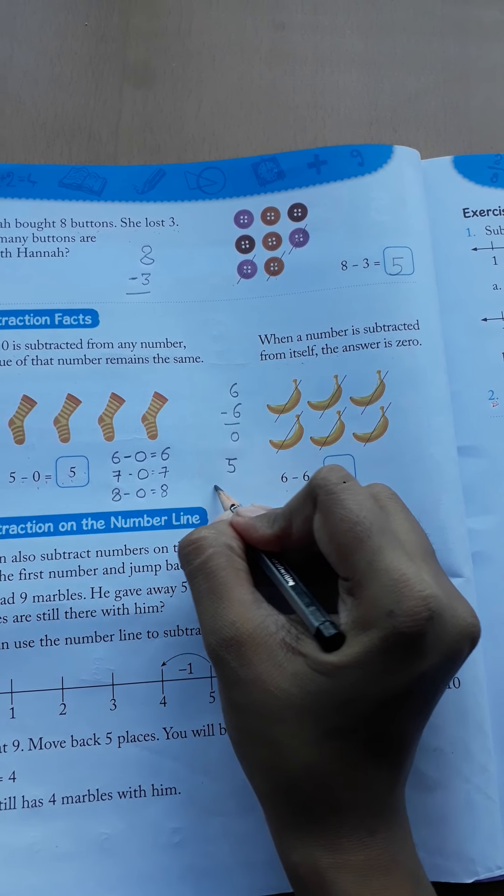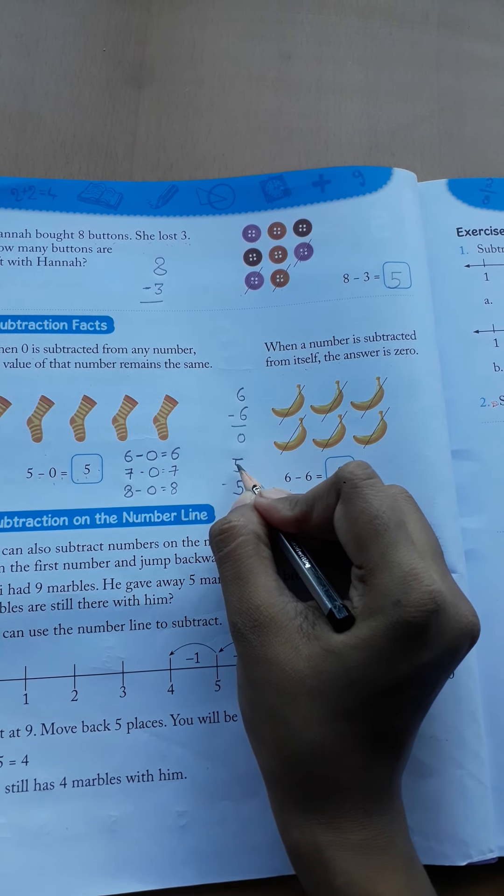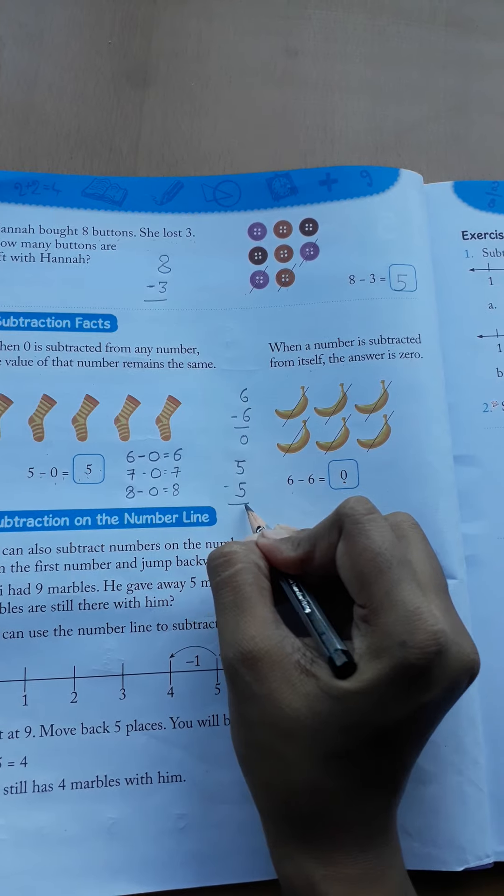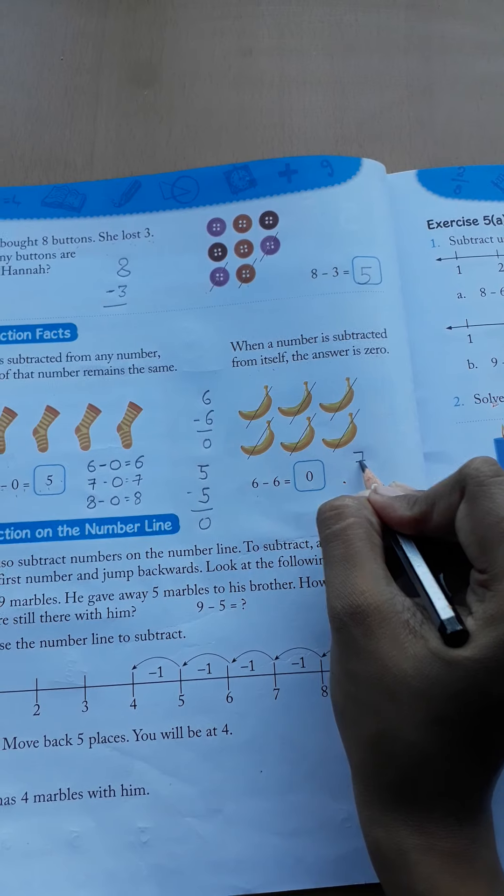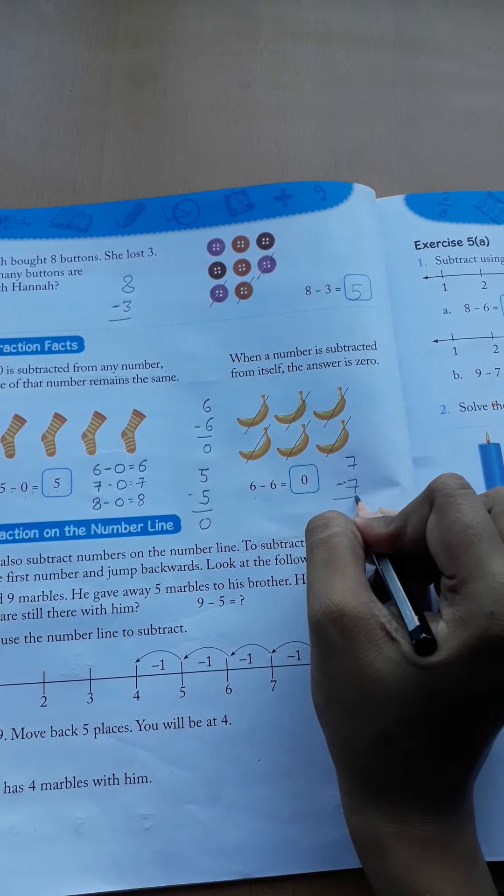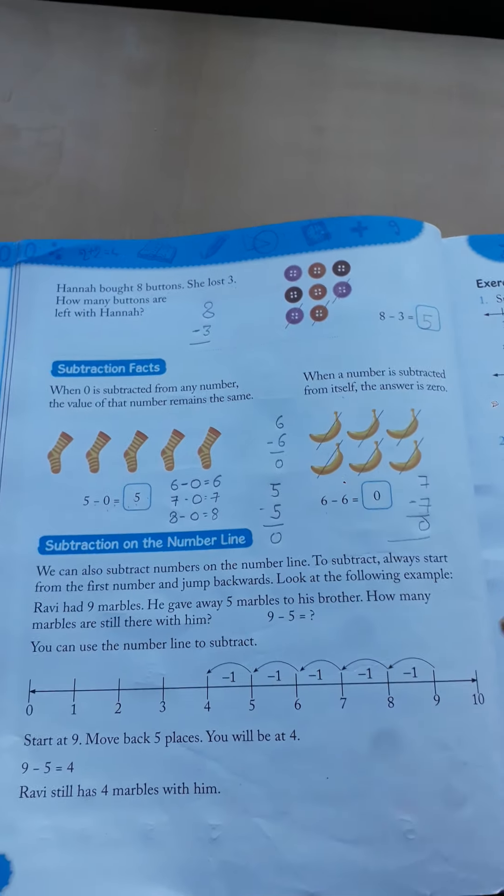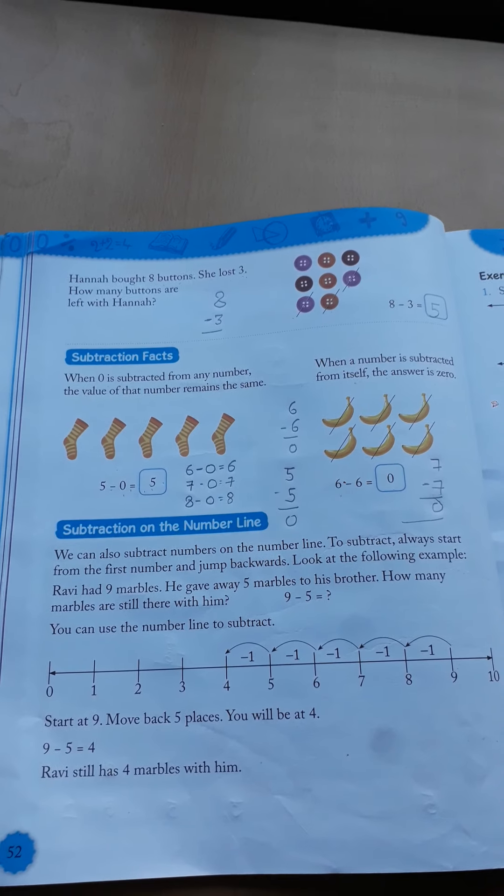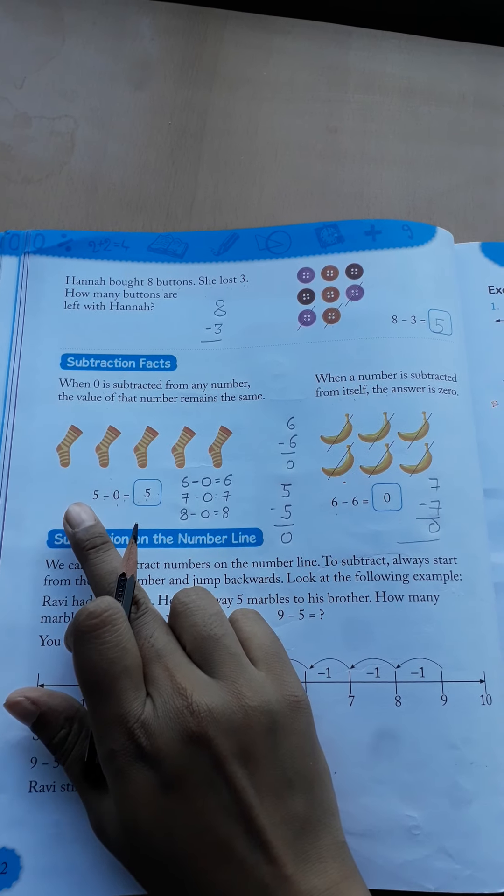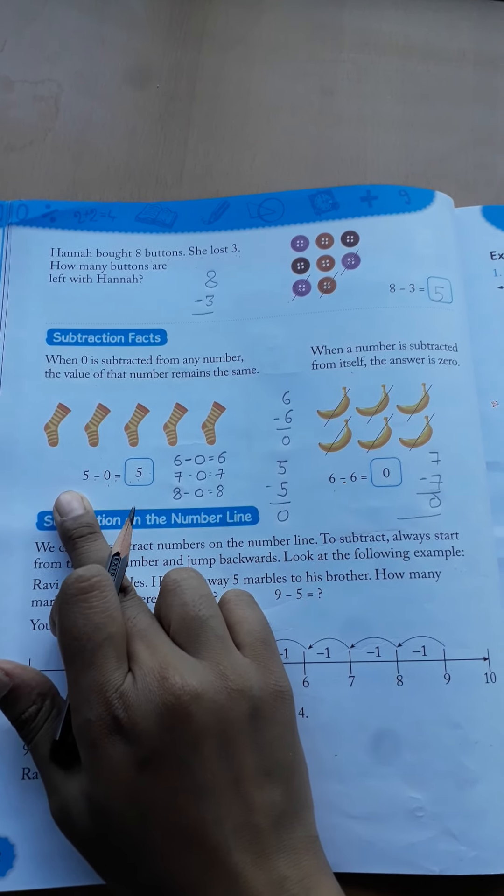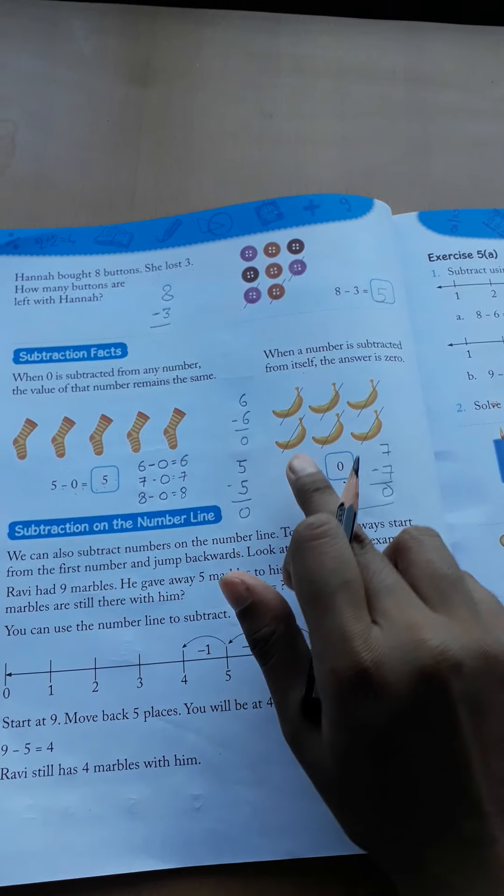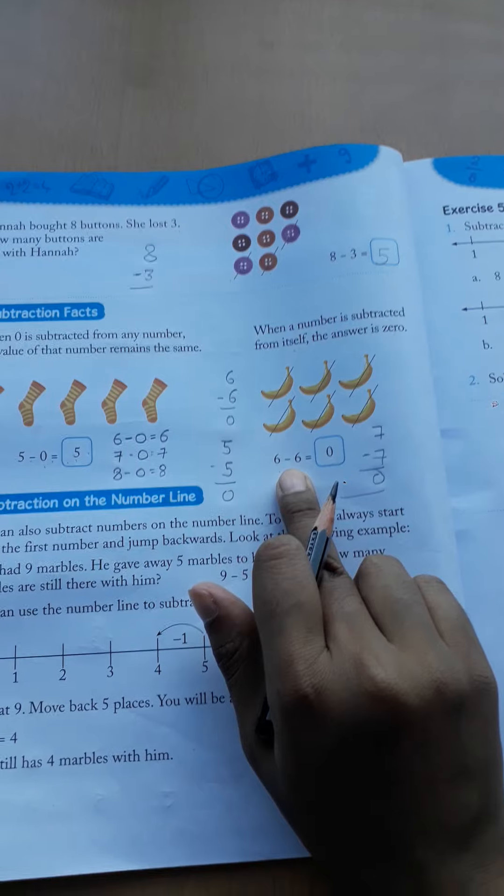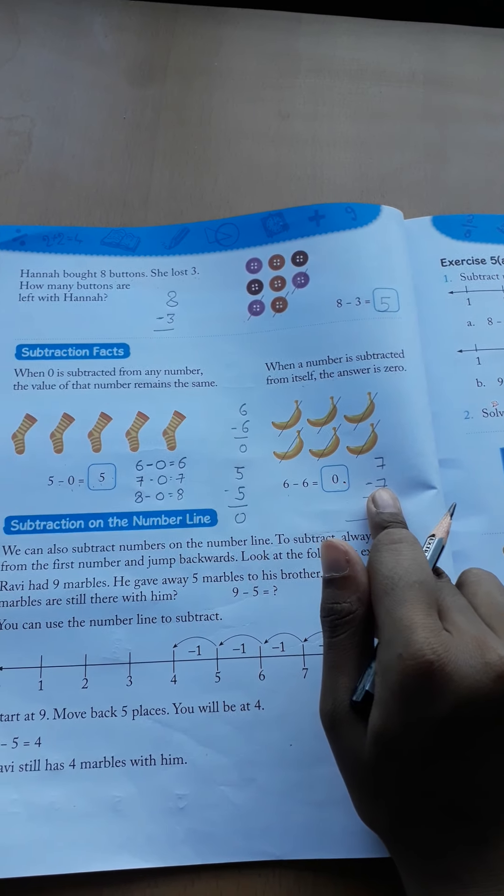Jab koi bhi number khud se subtract hota hai, when the number is subtracted by itself, so the answer will be 0. For example, 6 minus 6 equals to 0. 5 mein se agar hum 5 ko hi minus karte - if we subtract 5 minus 5, so it will also come 0. If we minus 7 from 7, so it will come 0. So just we have to keep in mind ki when we subtract any number from 0, the number will come as it is. But when we subtract number from number, so 0 will come.